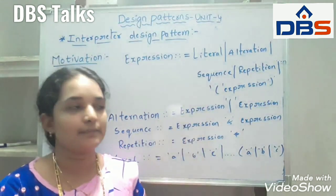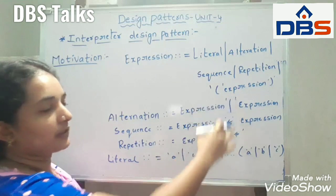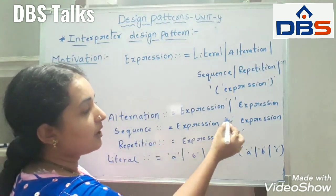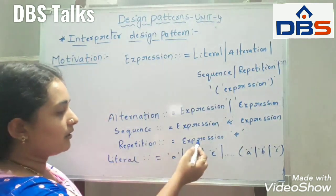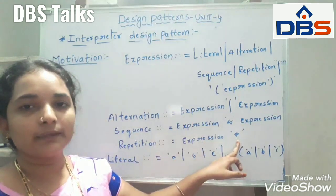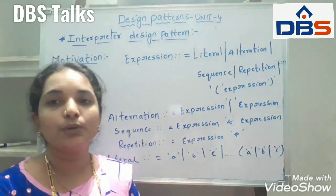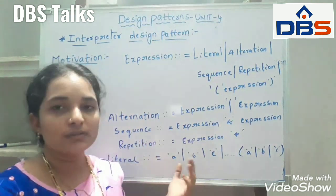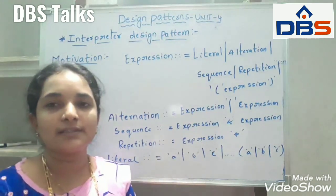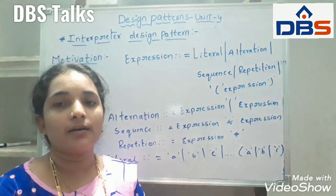If we talk individually about these expressions: in alternation, we are having one expression and another expression with an OR operation between them. Next, in sequence, I am having one expression using an AND operation with another expression. Repetition is nothing but one expression that can be repeated multiple times — we use the star operation. In these three expressions, we use symbols. For literal, it doesn't use any symbols — we are having only text or text format.